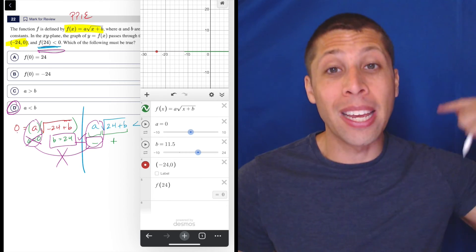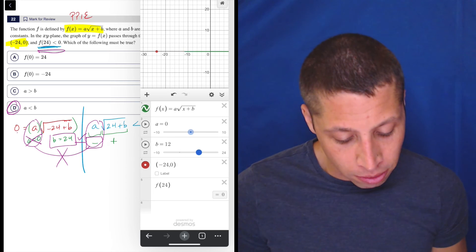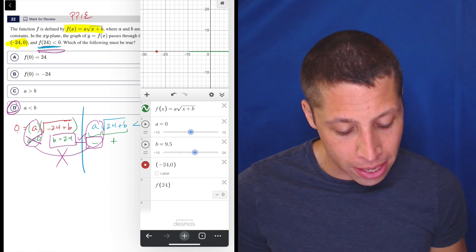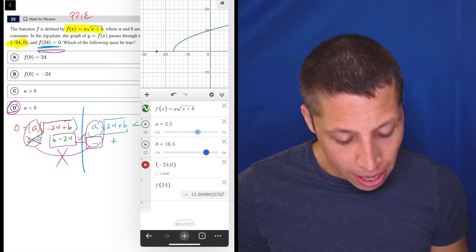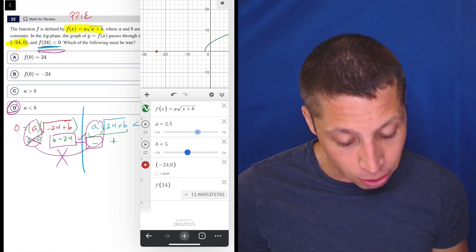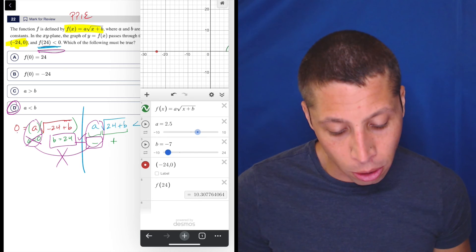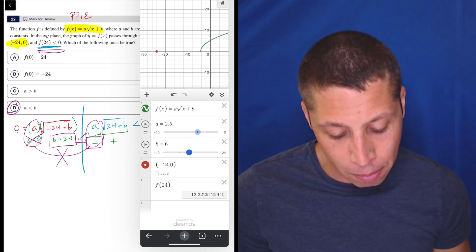So, this is not satisfying that condition no matter what B is. And if A is positive and B is something else, we're not hitting that point, that red point. So, it doesn't seem like we're getting any closer. We make B negative.